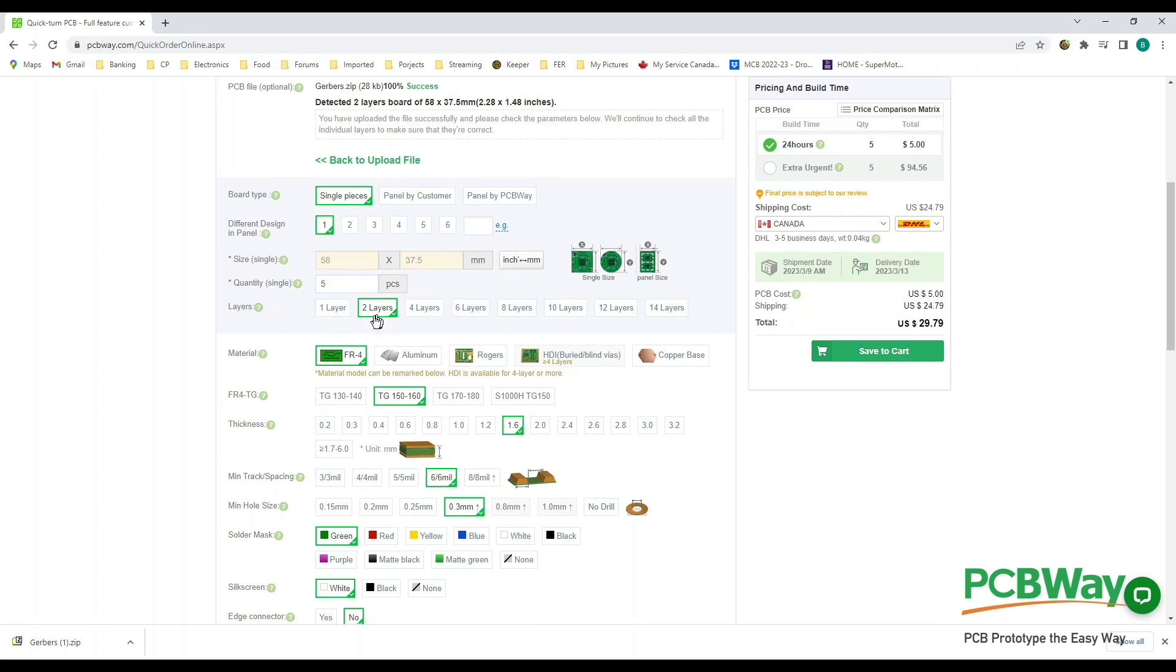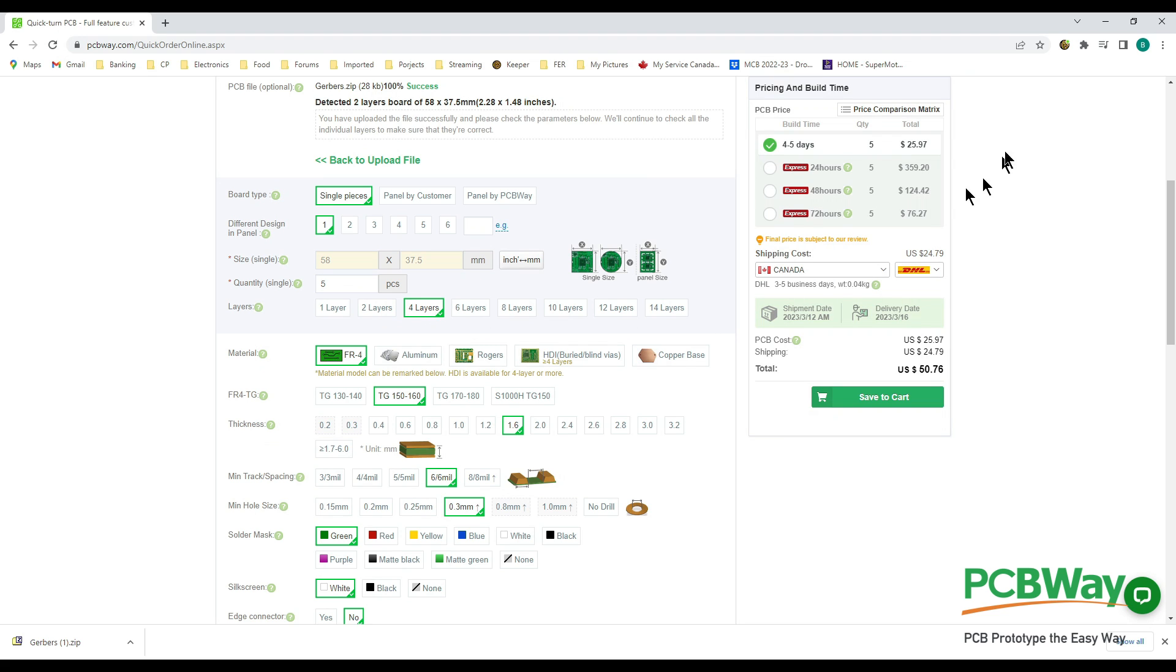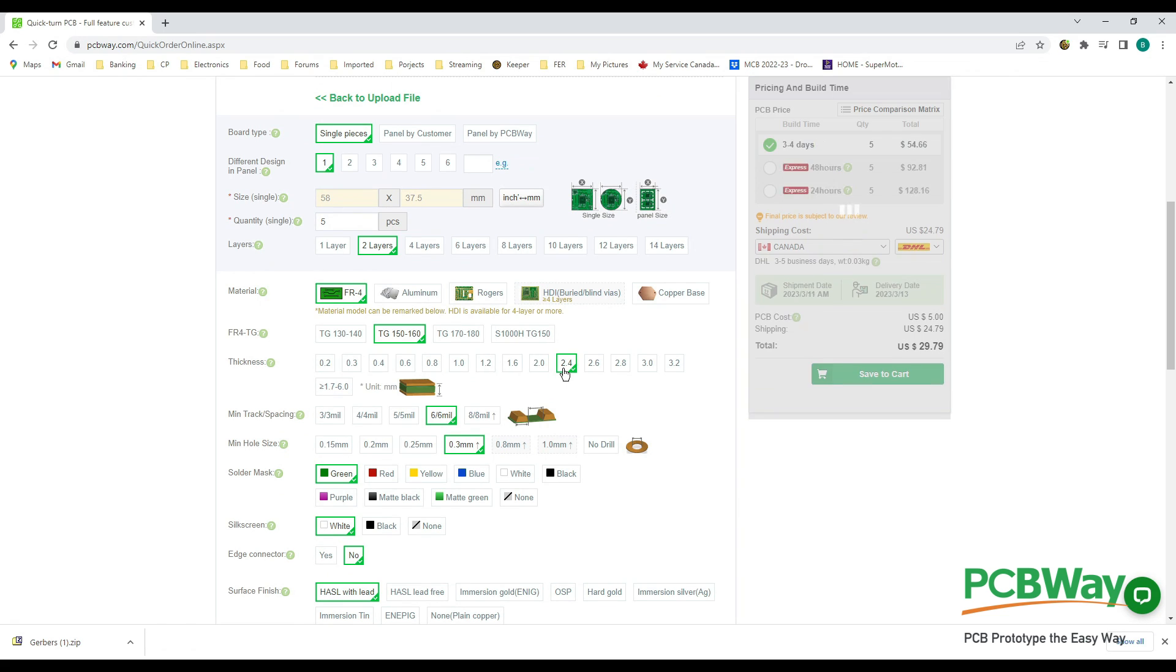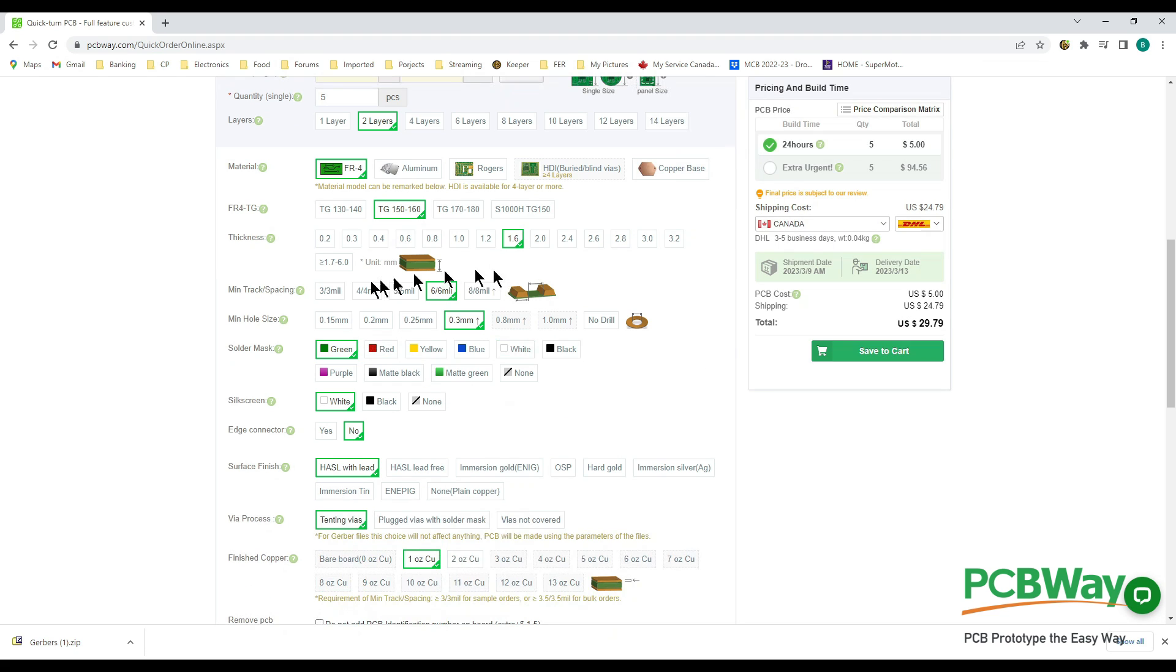You have a lot of different options here. It's a two layer board, but if you wanted a quote on a four layer version of the board you can click on that and it'll change the prices accordingly. You can choose your material, the thickness of the board. 1.6 is fine, but you could put in a thinner board or a thicker board depending on what your needs are, and the prices will be updated accordingly. We'll stick to 1.6.